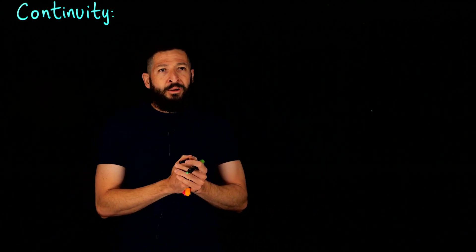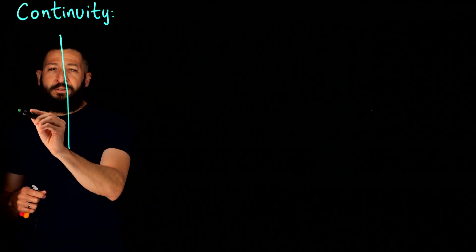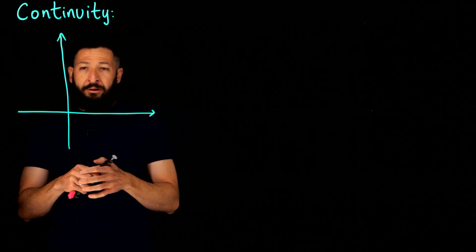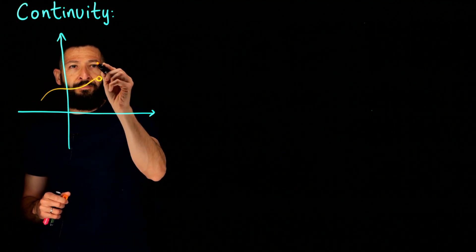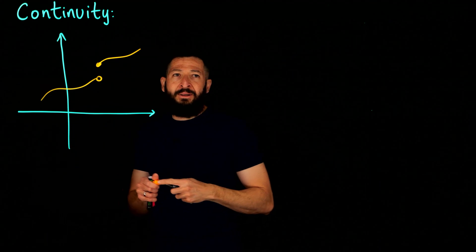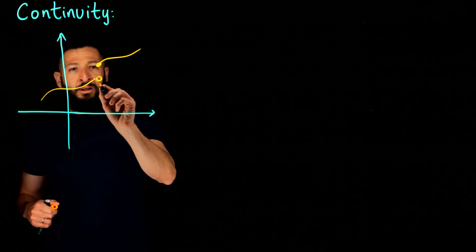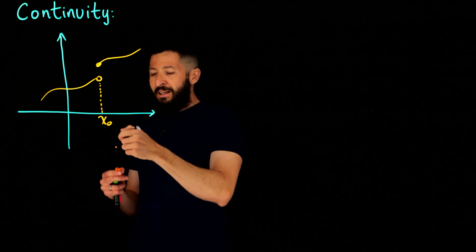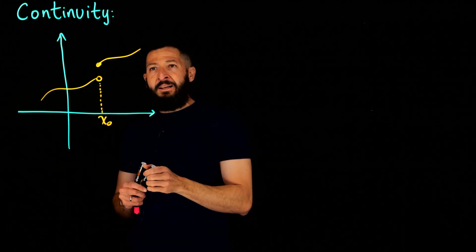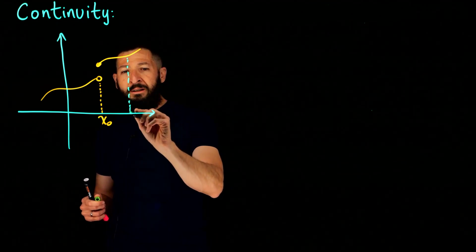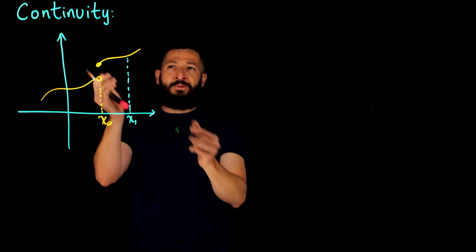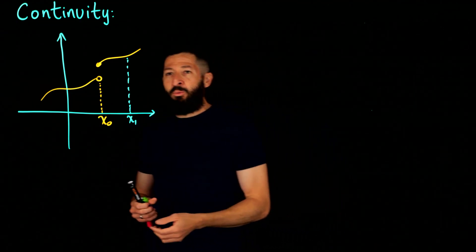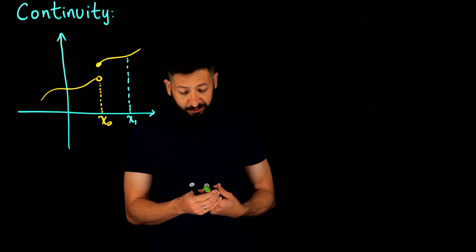What would a continuous function look like, or its graph? Well, continuity depends on where — because you could have the same function we drew before with a cut, and it doesn't seem continuous at X_naught because you have to lift your pencil to draw it. But if you pick any other point, say X1, the function is continuous there. So we want to talk about continuity at a specific point.